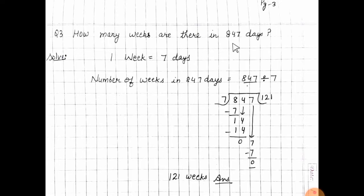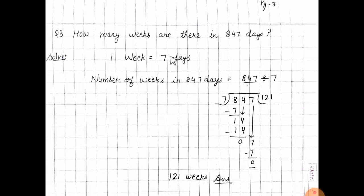3rd question: how many weeks are there in 847 days? आपको पता है कि 1 week में 7 days होते हैं। तो हमने find out करना है number of weeks in 847 days। हम क्या करेंगे — 847 को 7 से divide कर दोगे।